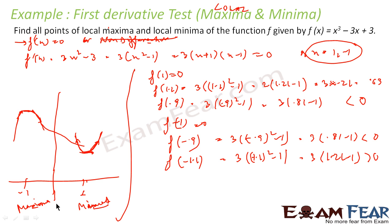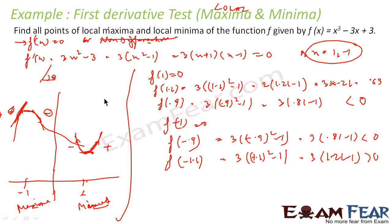So you can see that x = -1 is a maxima and x = 1 is a minima. At x = -1: slope to the left is positive, slope at the point is 0, slope to the right is negative — confirming maxima. At x = 1: slope to the left is negative, slope at the point is 0, slope to the right is positive — confirming minima. The angle the tangent makes with the x-axis tells us the sign of the slope.